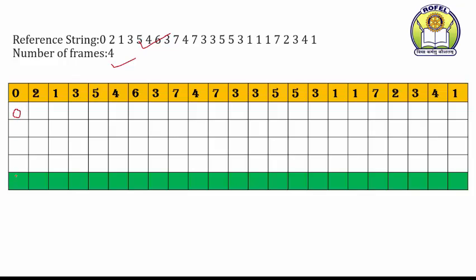So page zero — there is a page fault. Then two — two is also not in the memory, so there is a page fault. Then zero, two, one — once again there is a page fault. Then zero, two, one, and three is also not in the memory — there is a page fault.